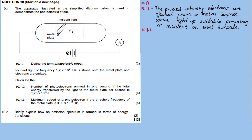Now moving to 10.1.2. We are given a statement that incident light of frequency 1.2 times 10 to exponent 15 hertz is shone onto the metal sheet and electrons are emitted. This means the photoelectric effect is occurring. We need to calculate the number of photo electrons emitted in one second if the total energy transferred by the beam of light to the metal plate per second is a given amount.